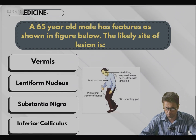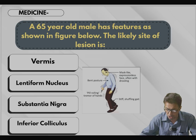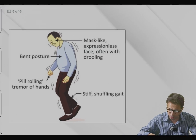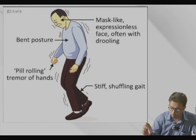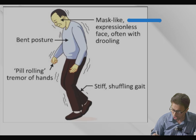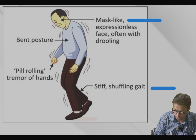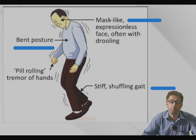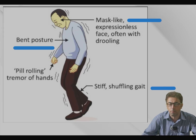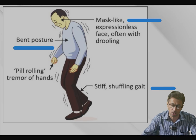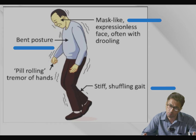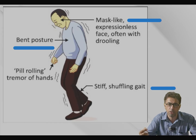Another question from medicine: a 65-year-old male has features as shown in the figure. The most likely site of lesion is — the figure shows: mask-like, expressionless facies; stiff shuffling gait; pill-rolling tremor of the hand; and bent posture. These are four important clues. Mask-like facies in which the person is not able to express — the face looks expressionless, sometimes with drooling from the corner of the mouth. Short shuffling gait — he takes small steps. Pill-rolling tremor of the hand — that is a resting tremor, not action tremor.